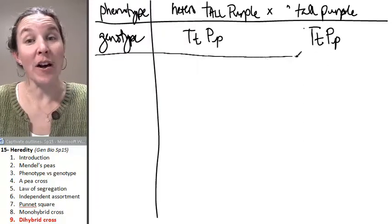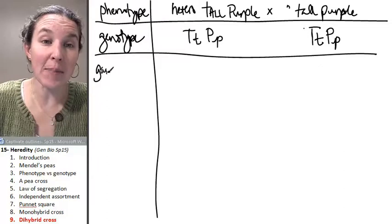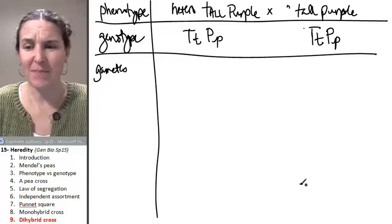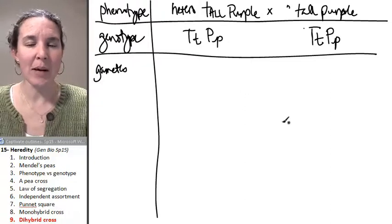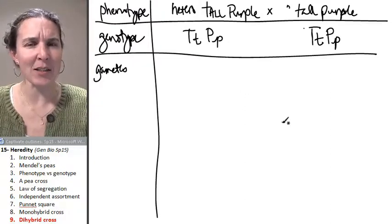After we figure out the genotype, we have to figure out the possible gametes. And the possible gametes, this is where you have to visualize meiosis. Once again, and this time it might be a little more difficult.